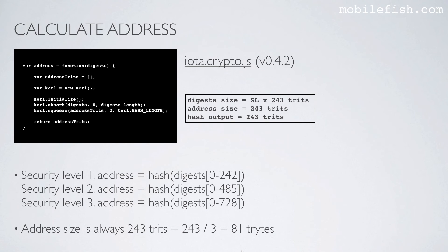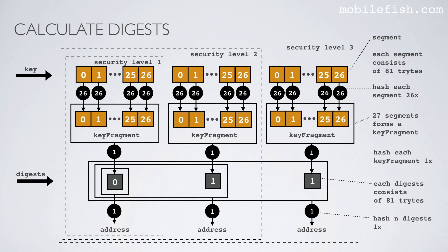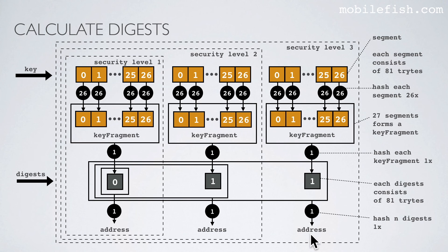The address size is always 243 trits, which is 81 trits. Here is a simplified explanation. For security level 1, just hash the digest consisting of 81 trits — only hash it once. For security level 2, take both digests together, each consisting of 81 trits, and hash them to get the address. For security level 3, take all three digests together, each consisting of 81 trits, and hash them to calculate the address.